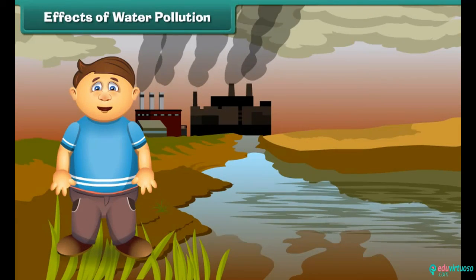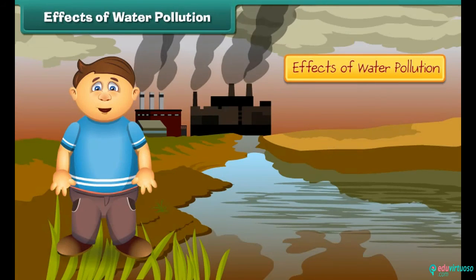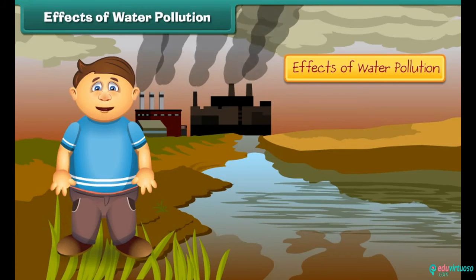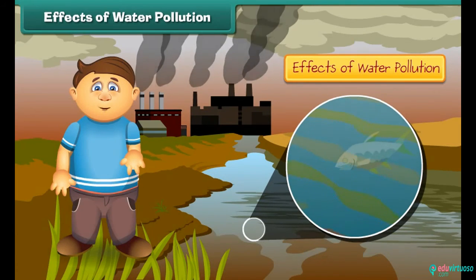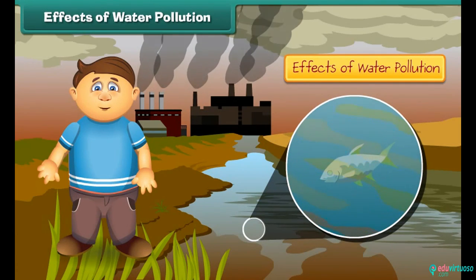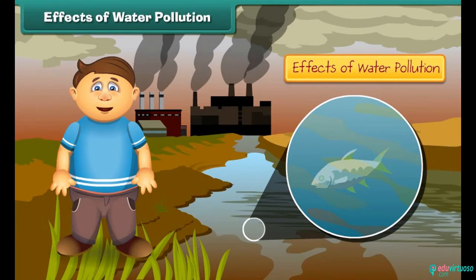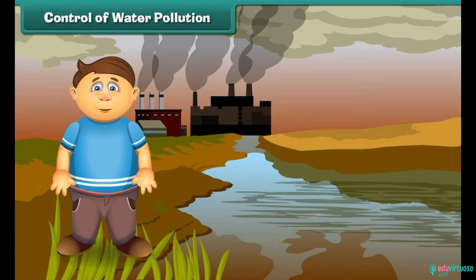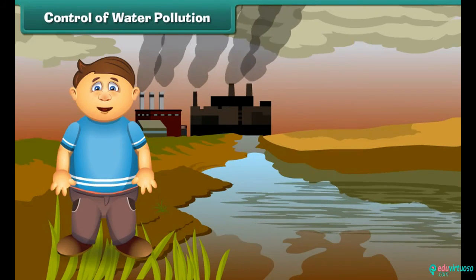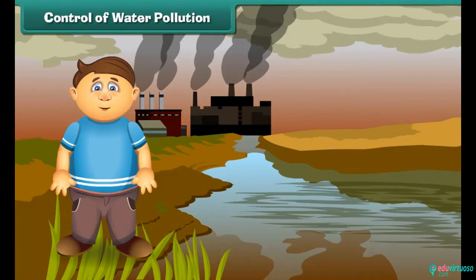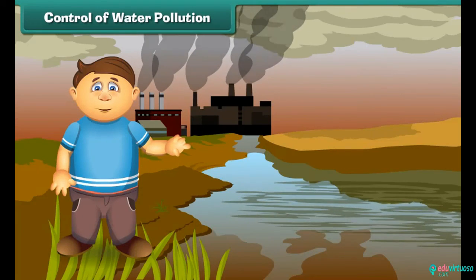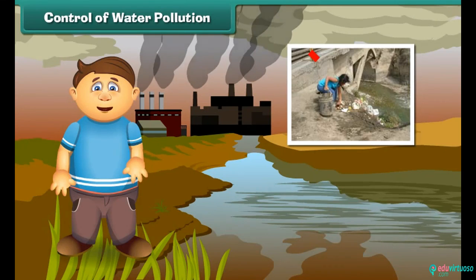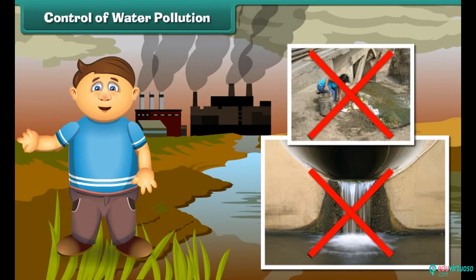What are the effects of water pollution? Poisonous chemicals released from factories and industries enter water bodies, due to which marine life is getting affected. If we consume such fish, we will also fall ill. To control water pollution, we should not dispose of garbage and harmful chemicals directly into ponds, lakes and rivers.